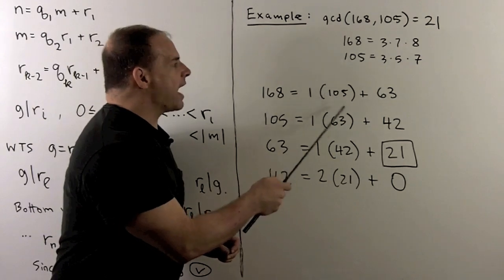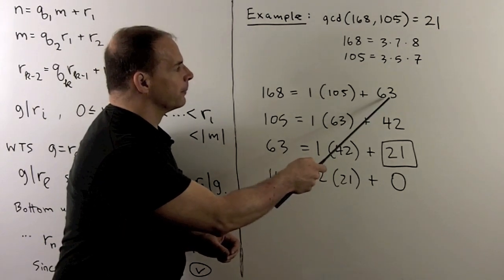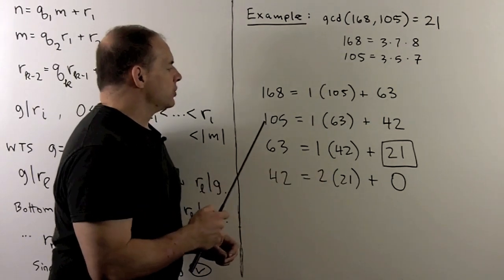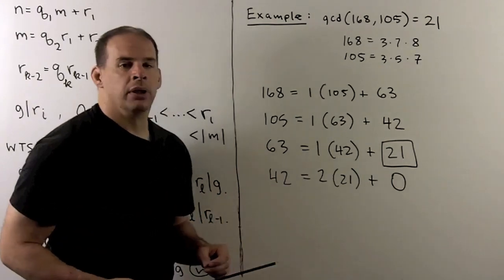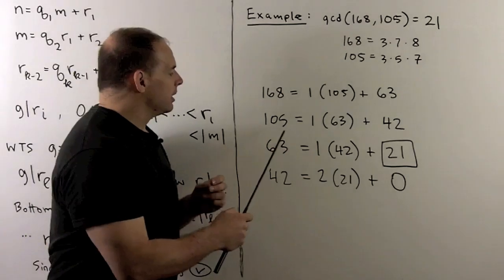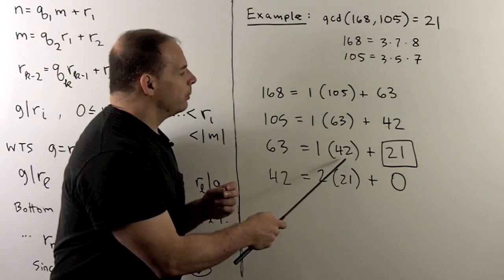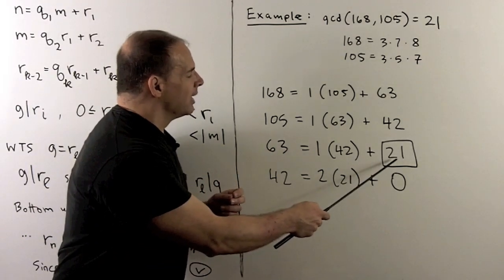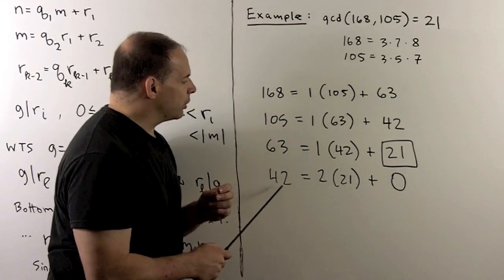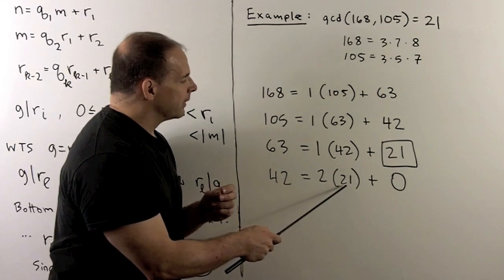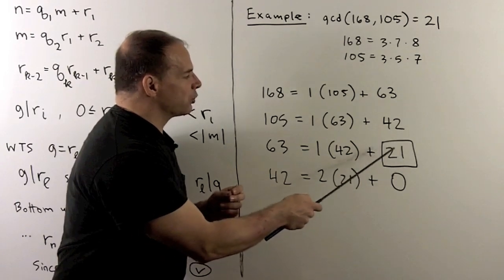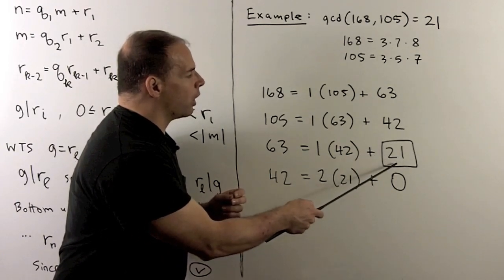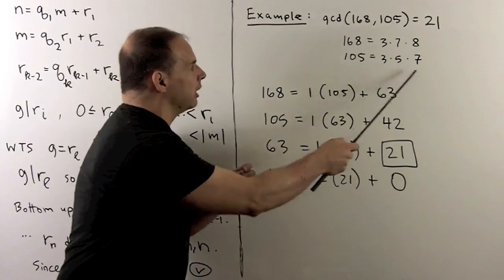I have 168, 105, remainder 63. We shift. So, I have 105, 63, remainder is 42. We shift. 63, 42, remainder is 21. Then we shift. I have 42, two 21s, remainder is 0. So, that means greatest common divisor is the last remainder before the 0, which is 21. And that agrees with our work here.